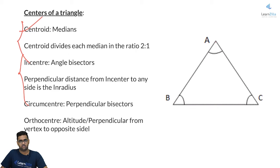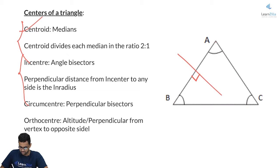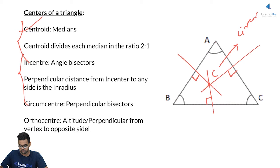Next is the Circumcenter, which is the point of intersection of the perpendicular bisectors. For AB, this is the perpendicular bisector, which bisects it perpendicularly. For AC, this is the perpendicular bisector. For BC, this is the perpendicular bisector. The point of intersection of all these perpendicular bisectors is the Circumcenter.